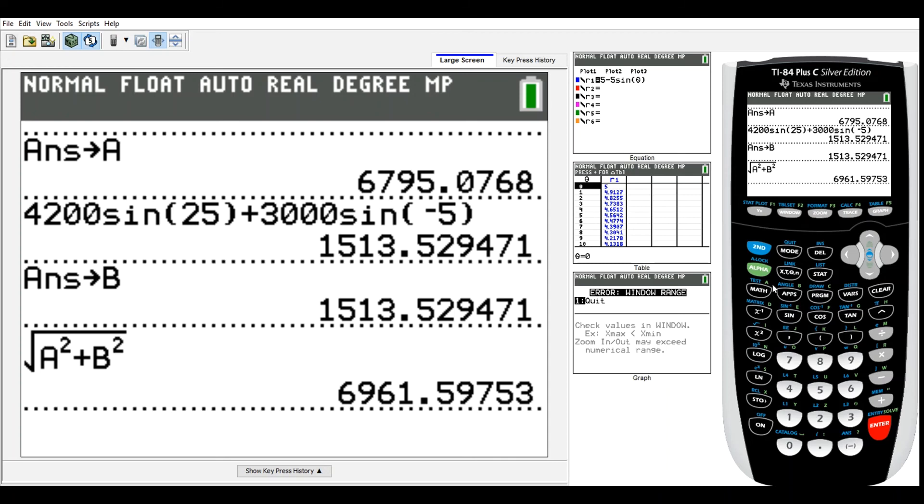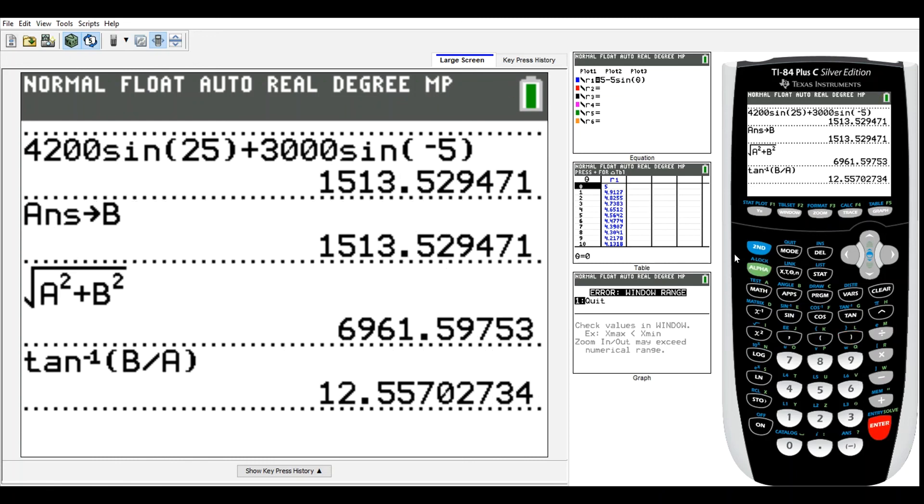And then one last calculation we had, tangent inverse, this was for our angle theta of alpha B divided by alpha A. And there's our 12, approximately 12.6 degrees. All right, and that is it.